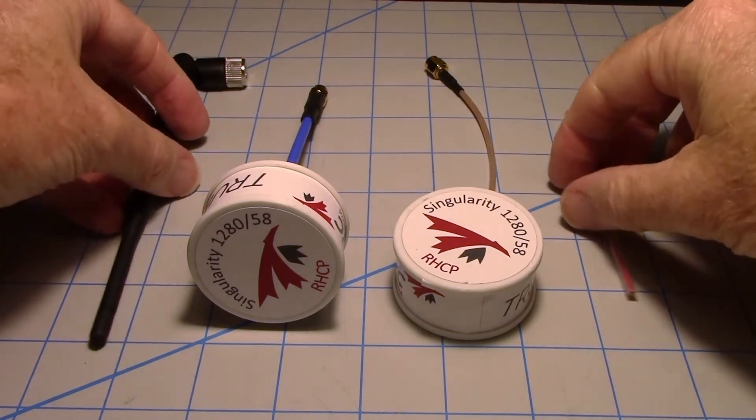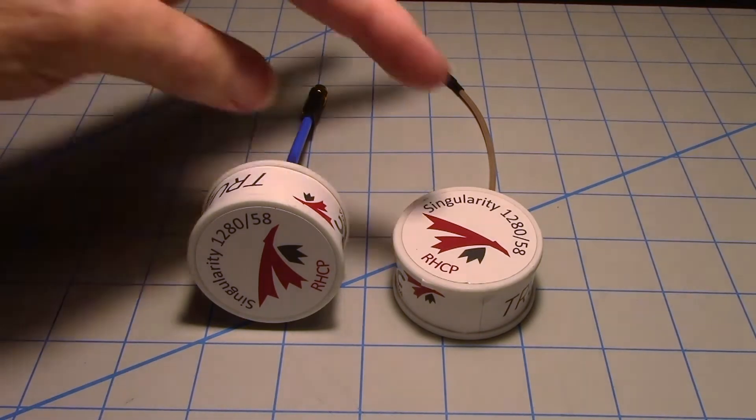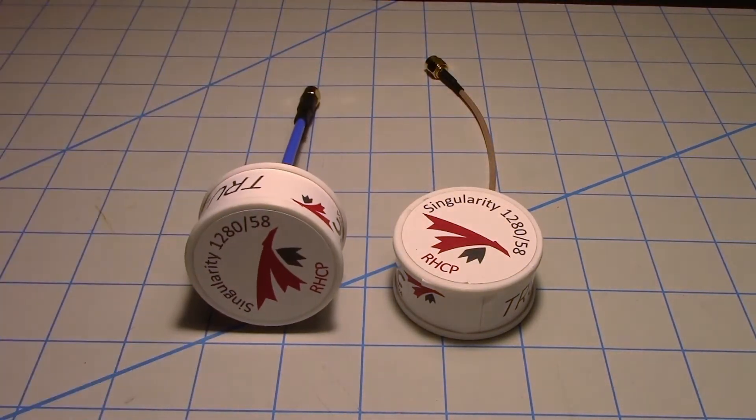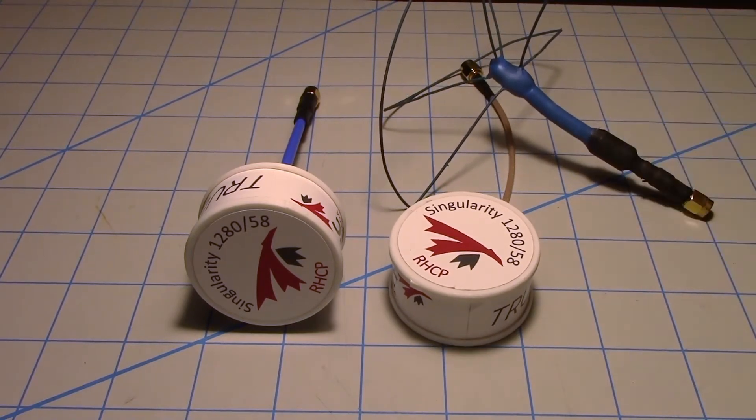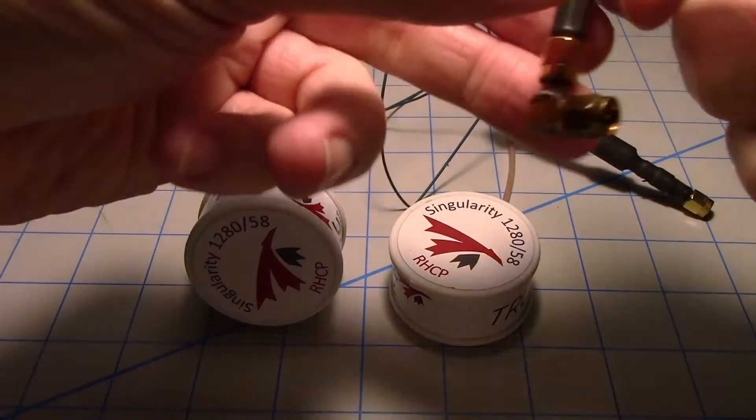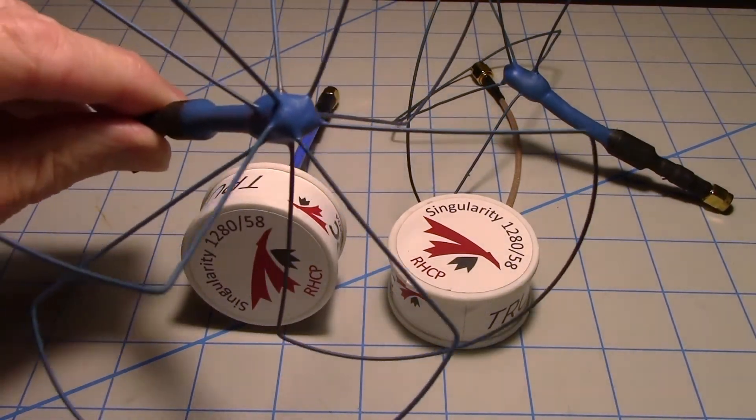But if you look at what you could use if you're using circular polarized, these are circular polarized, so if you're going to go circular polarized other solutions would be this on the transmitter side which is huge in comparison and this on the receiving side which is also quite large.